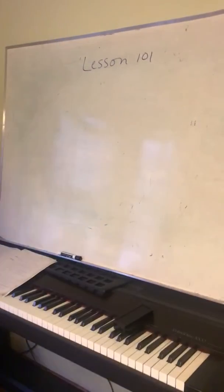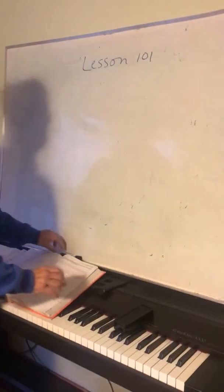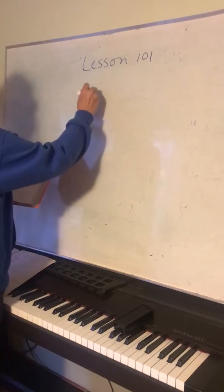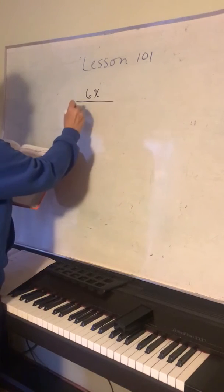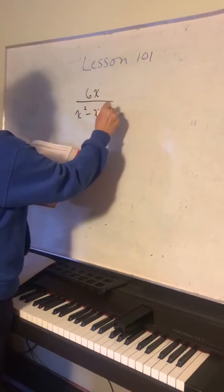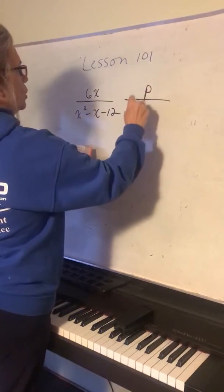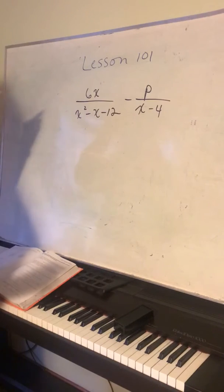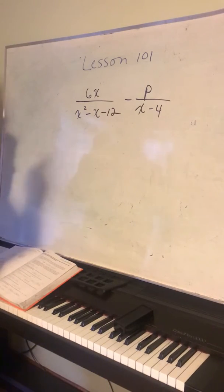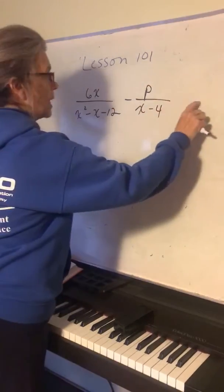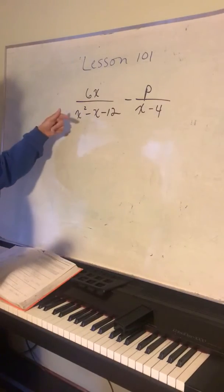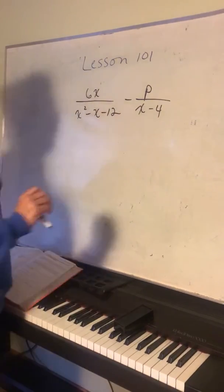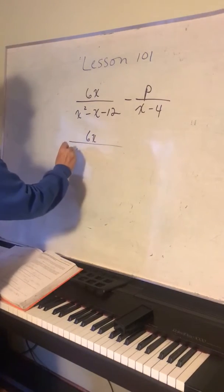This next lesson is lesson 101 and we're going to add some fractions. These are not equations — they're in expression format. What you will do is factor where you can, then look for the common denominator. Since there's no equal sign, you can't cancel the denominators — you have to make the denominators the same when adding or subtracting fractions.